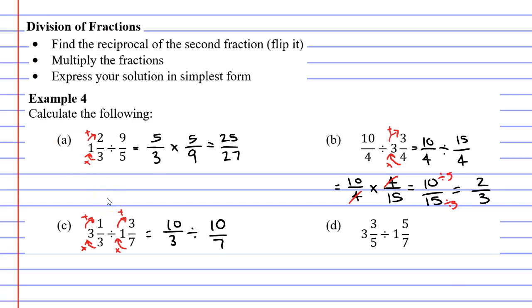Now that we have them as improper fractions, we can follow our normal process. We can keep the first fraction the same and flip the second fraction. We'll make it 7 over 10 and change our divide to multiplication. Once again, we have a number at the top that's the same as a number at the bottom. So we can just cancel them.